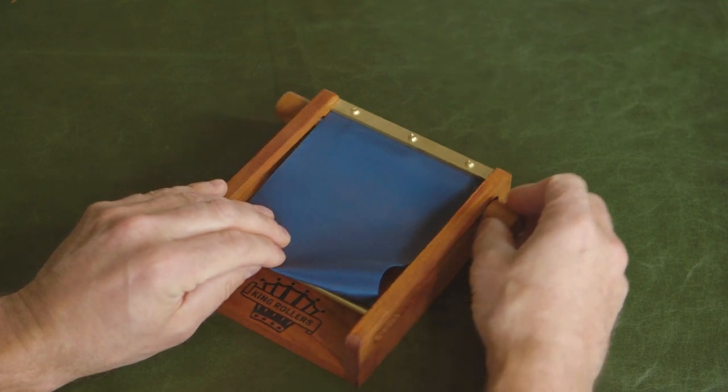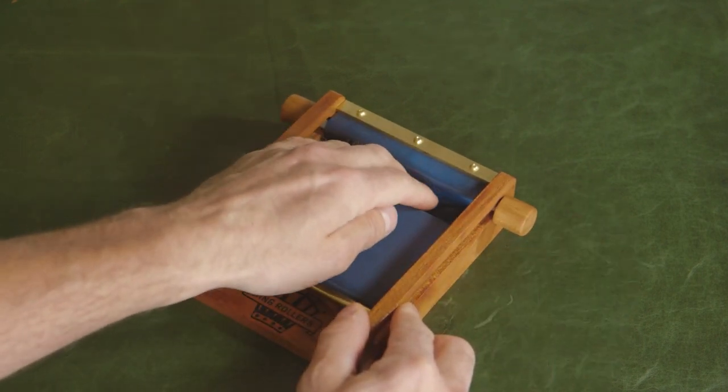To begin rolling, make sure the rod is to the back and the pocket of the cloth is in the front of the rod.